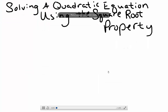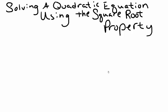In this video, we're going to learn how to solve a quadratic equation using the square root property. Suppose I have the equation 3x squared plus 2 equals 77.